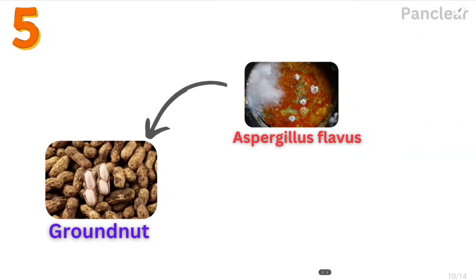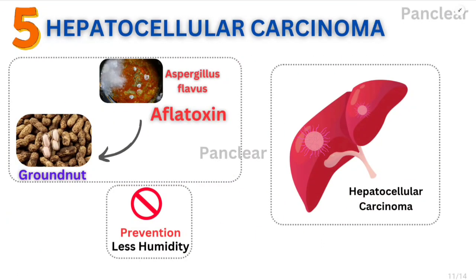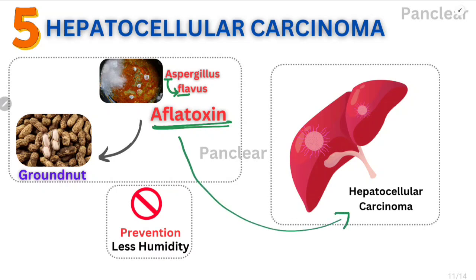The fifth and final adulteration is common groundnut. Groundnuts are contaminated with Aspergillus flavus. Obviously it has a toxin — aflatoxin. Why is it called aflatoxin? Aspergillus flavus — A-F-L — aflatoxin. Aflatoxin has the propensity to create hepatocellular carcinoma — that is liver cell carcinoma. How can we prevent this? By preventing humidity — if there is humidity, the fungus Aspergillus flavus grows. So we should prevent humidity.